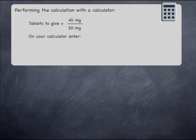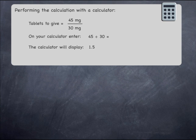To perform the calculation with a calculator, you simply need to enter 45 divided by 30 and then press equals. The calculator will display an answer of 1.5, meaning that 1.5 tablets should be administered. This is in line with the earlier estimation of between 1 and 2 tablets.